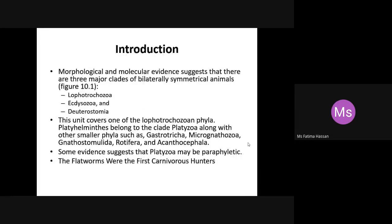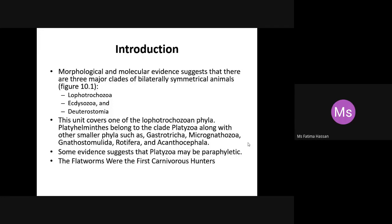The introduction: the molecular evidence, according to our classification of Kingdom Animalia, which are members of the kingdom animals — we have three clades or three groups. Previously we considered two clades, deuterostomia and protostomia, which are bilaterally symmetrical animals. But according to molecular evidence, we can categorize the bilaterally symmetrical animals further.